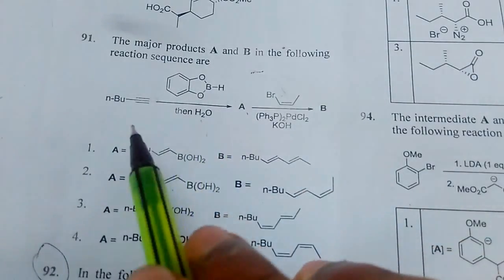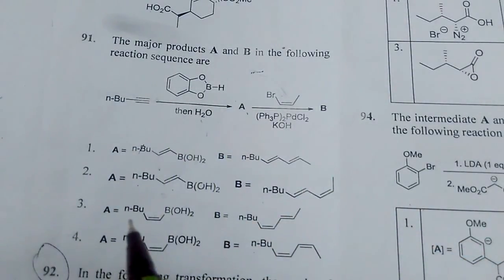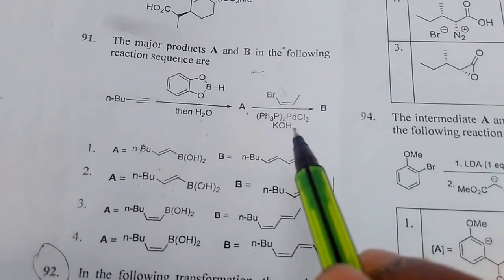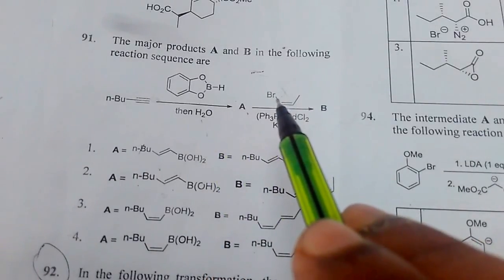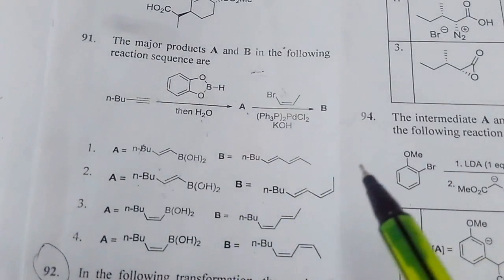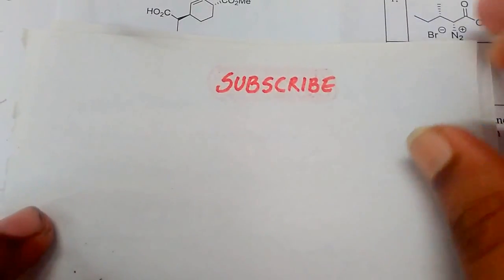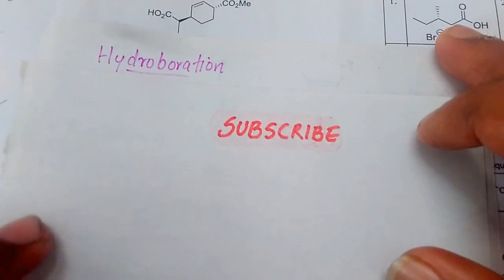The triple bond is nothing but a hydroboration on the alkyne bond, and here the boron will form a Suzuki coupling. So let us look at how it is forming. Don't forget to subscribe to our channel.